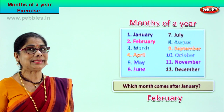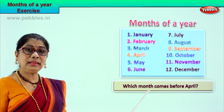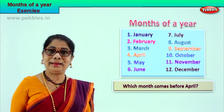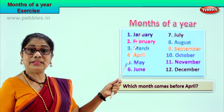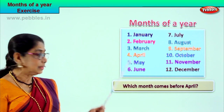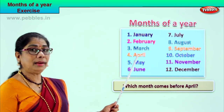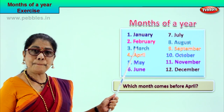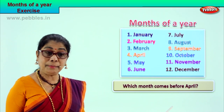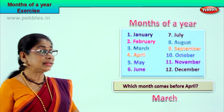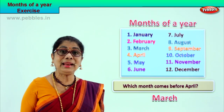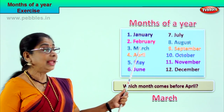Let's take another question: which month comes before April? Let's look — the first month is January, the next is February, then comes March, then comes April. Which month comes before April? March. The month of March comes before April. Spell March: M-A-R-C-H. Which month comes before April? March comes before April. Good.